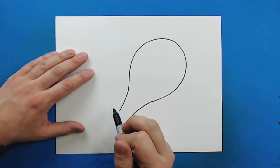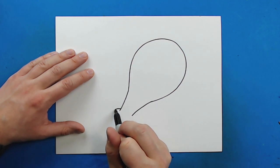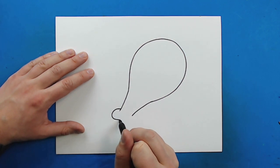Next, starting right here, I'm going to draw a line that's going to curve around like this, and then it's going to come back up to here.